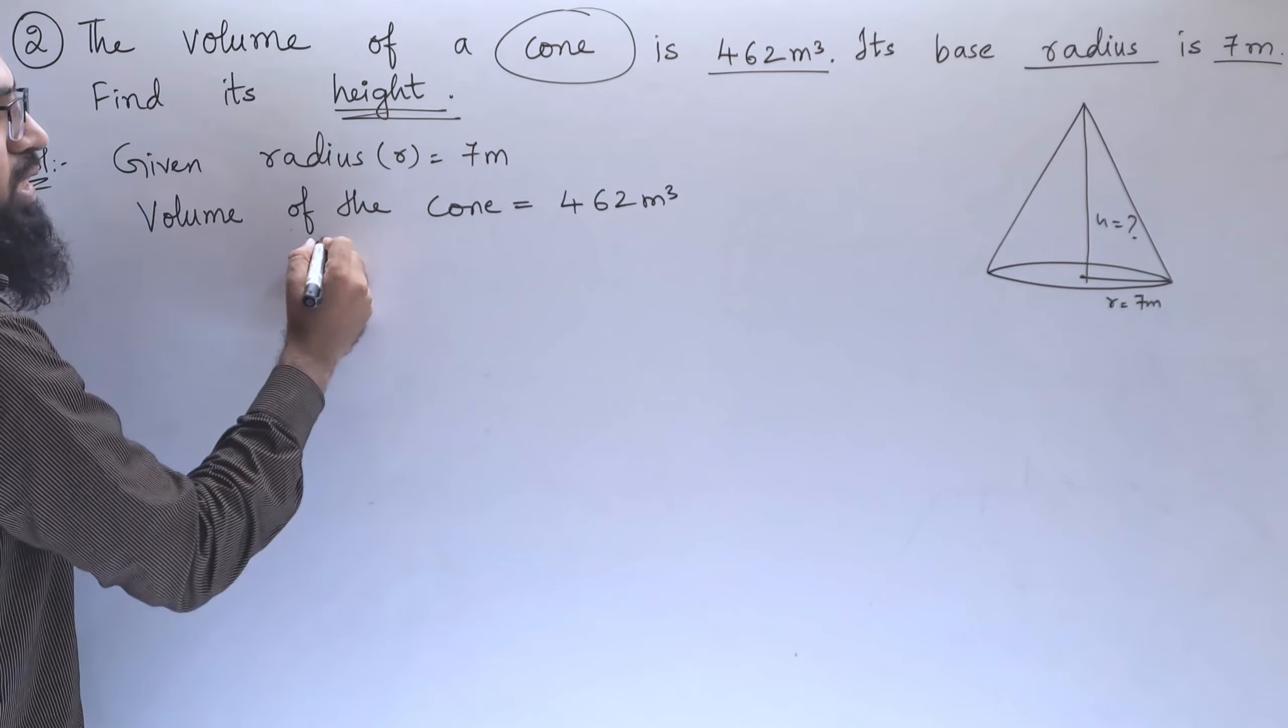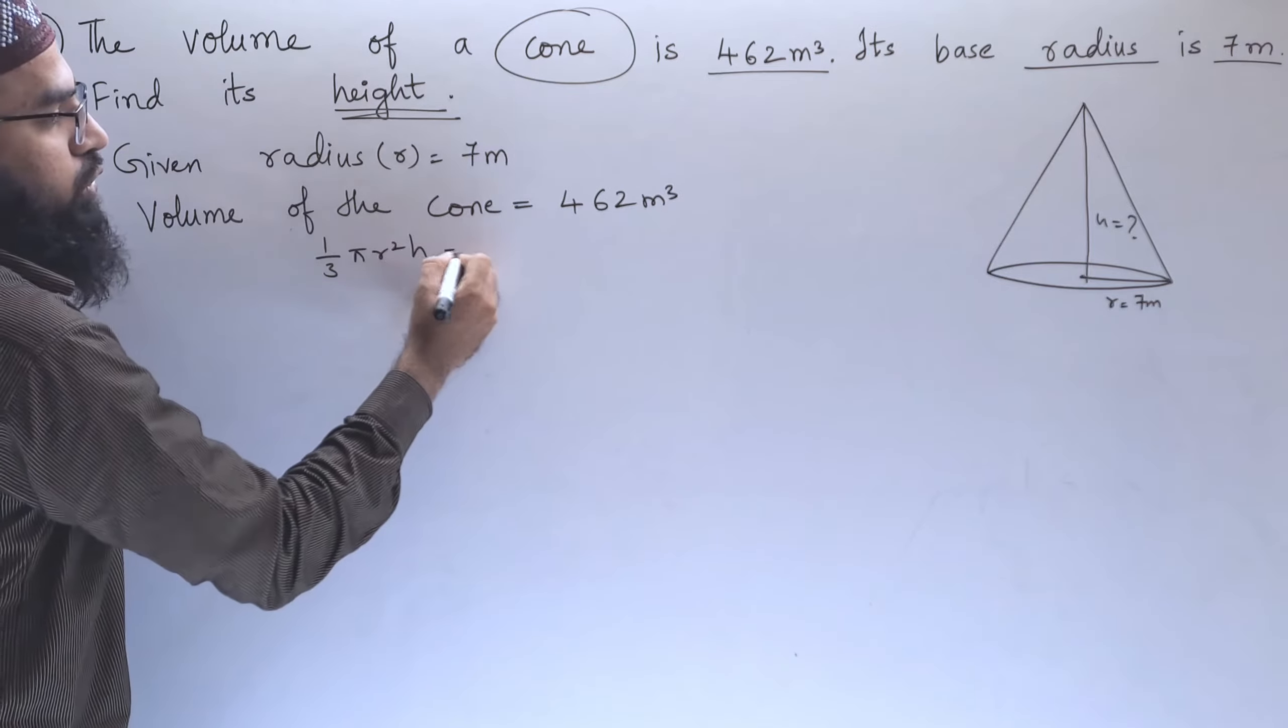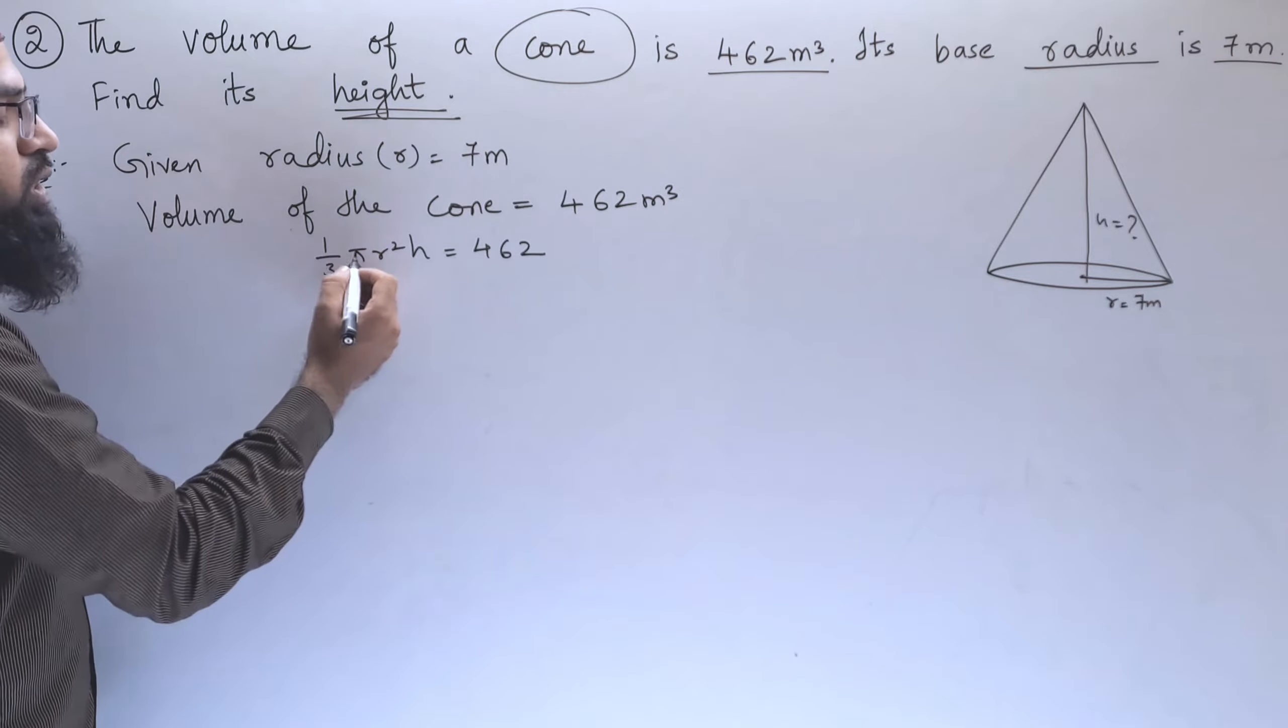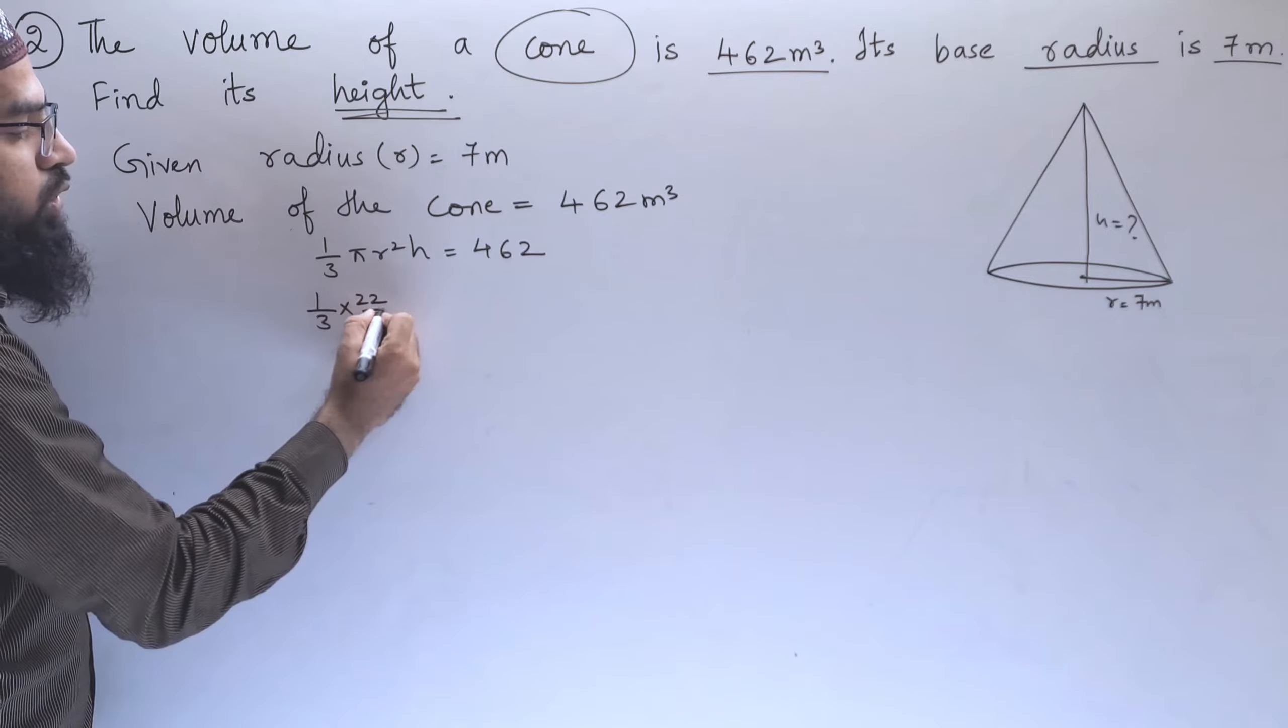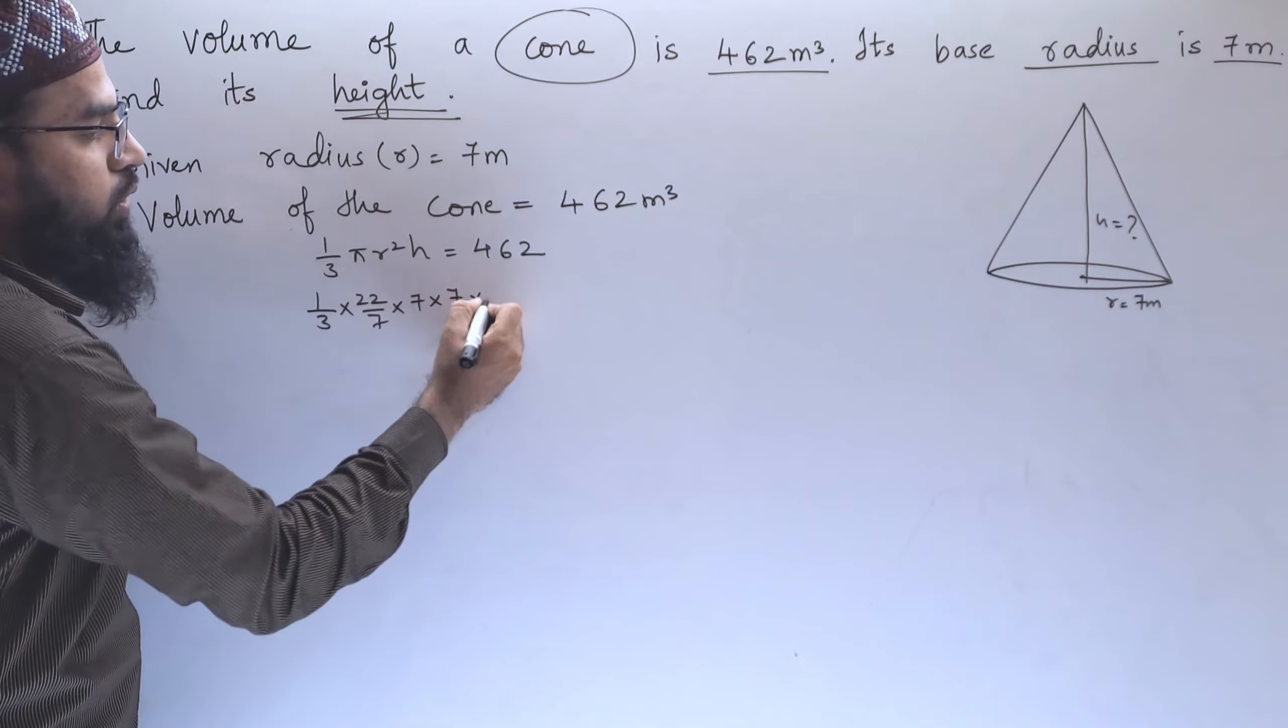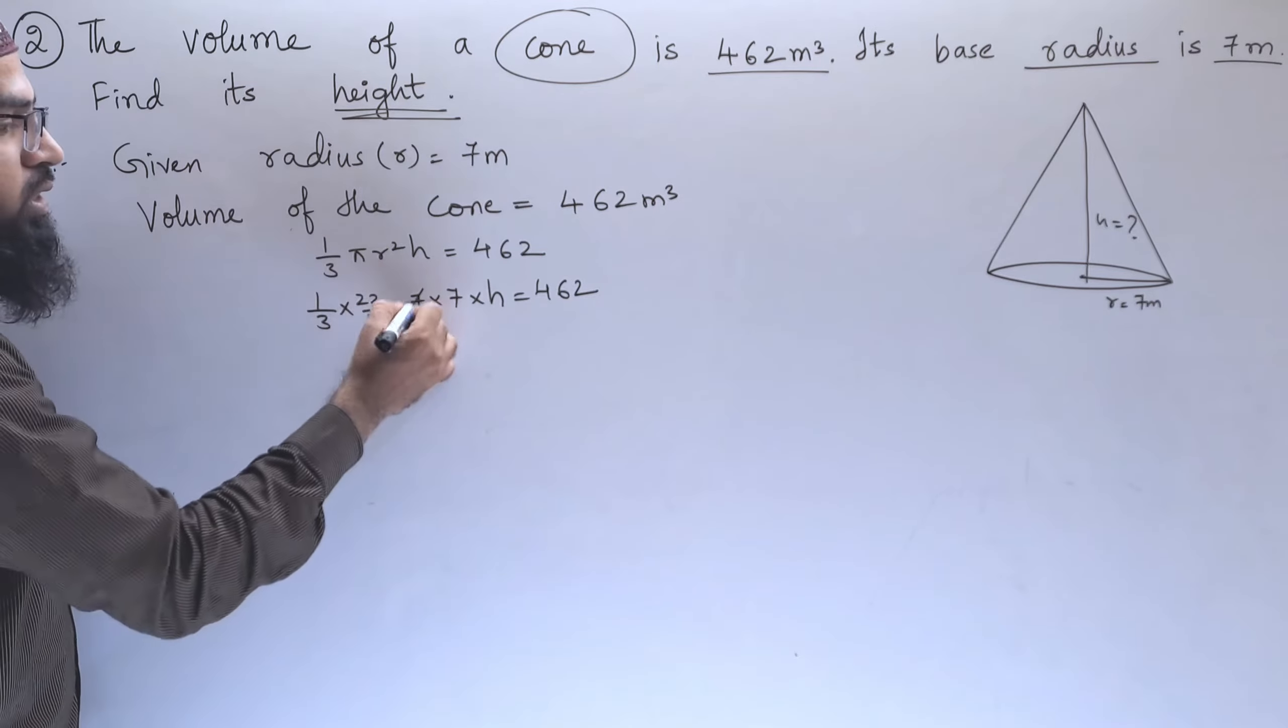Volume of the cone formula is 1 by 3 pi r squared h, so 462 is also given. Now in this formula we will substitute the values: 1 by 3 into pi, which is 22 by 7, into r is 7 into 7 into h equals 462. Now you can cancel this